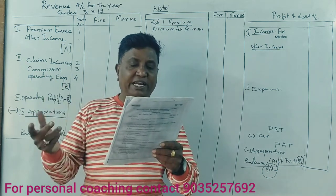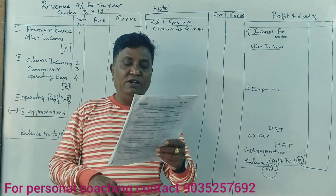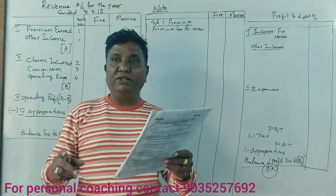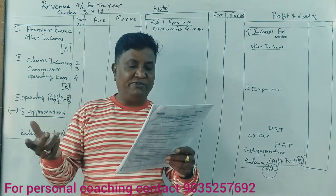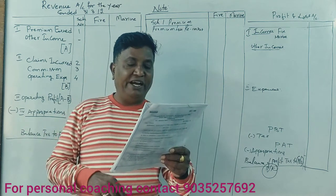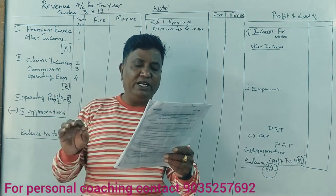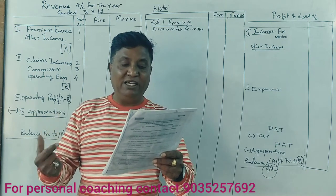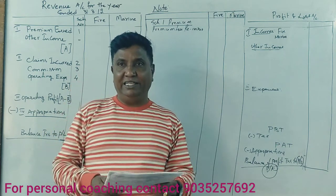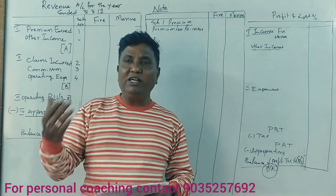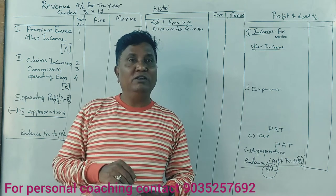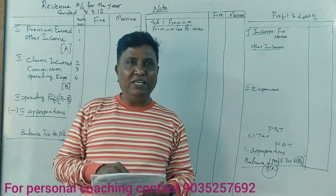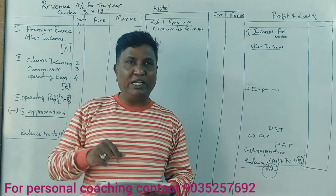Additional information: Premium outstanding on 31st March 2015 — fire and marine figures are given. Claims outstanding on 31st March 2015 — fire and marine figures are given. A fire claim amounting to ₹11,000 was recovered by reinsurance.